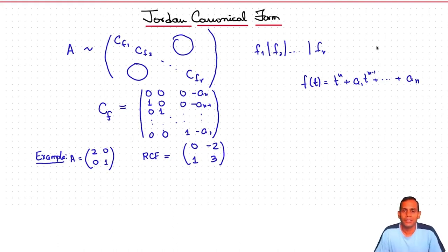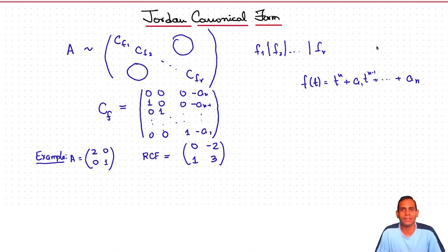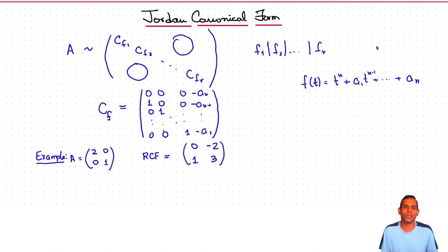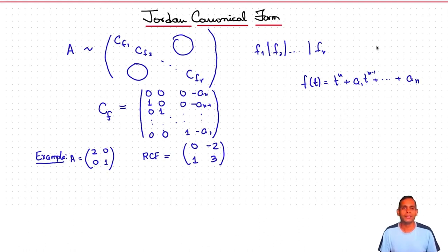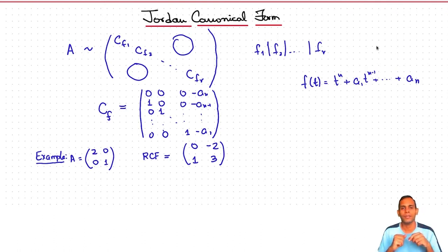When we looked at the classification of finite abelian groups of a given order, there were two ways to do it. One was to directly apply the structure theorem for finitely generated modules over a PID, and the other was to apply the structure theorem after first applying the primary decomposition. The difference between rational canonical form and Jordan canonical form is the same.